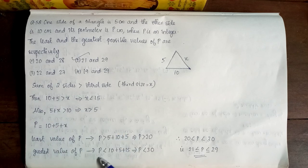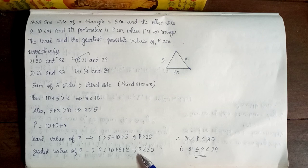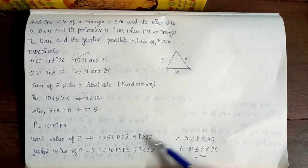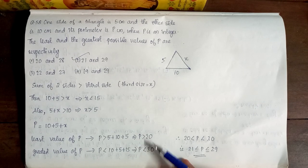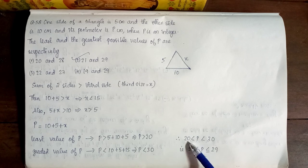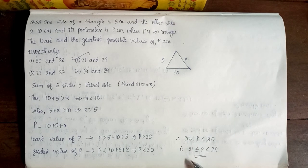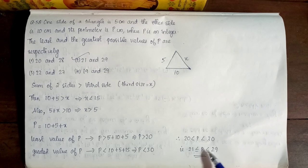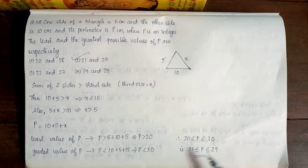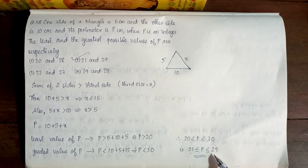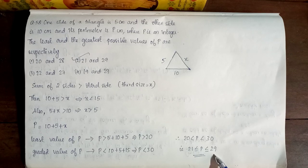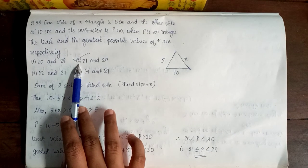So, I will get p is less than 10 plus 5 plus 15. This implies p is less than 30. Now, I will get the inequality in the same way. So, I will get 20 less than p less than 30. So, I will get 21 less than or equal to p less than or equal to 29. Least value in the same way is 21. Greatest value in the same way is 29. So, number option 2 is correct.